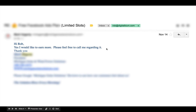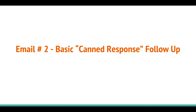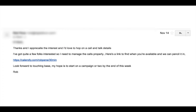After I got this email, as you can imagine, I got a ton of responses at the same time. So what I typically teach is you need to have a canned email already prepared. In Gmail, there's a feature in the labs - you go to settings, then labs, then find 'canned response,' enable it, hit save. Now when you click compose, you search canned response and create that canned response follow-up. It says: 'Thanks, I appreciate the interest and I'd love to hop on a call and talk details. I've got quite a few folks interested, so I need to manage my calls properly.' I set up my Calendly, use this canned follow-up, switch out their names, and send it.